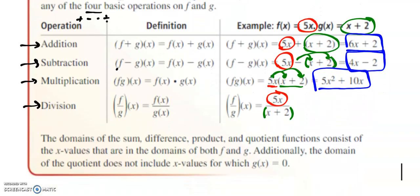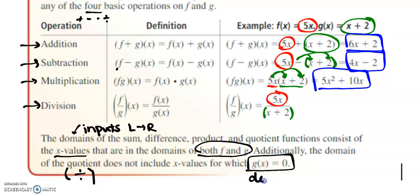The domain. So remember, domain is the set of all inputs. If you're looking on a graph, it's looking from left to right. The domains consist of the x values that are in the domains of both f and g. Additionally, when we have the quotient, the division one, we have to make sure that g(x), the denominator, can't equal 0.